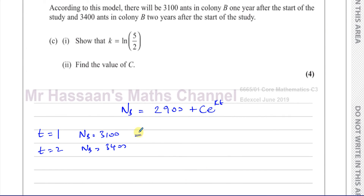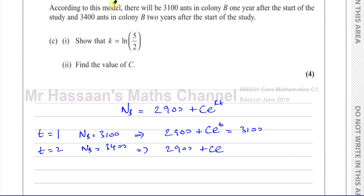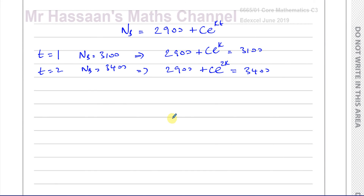From this we can form a pair of equations. When t equals 1: 2900 plus c e to the power of k equals 3100. When t equals 2: 2900 plus c e to the power of 2k equals 3400. Simplifying: c e to the power of k equals 200 (equation 1), and c e to the power of 2k equals 500 (equation 2).